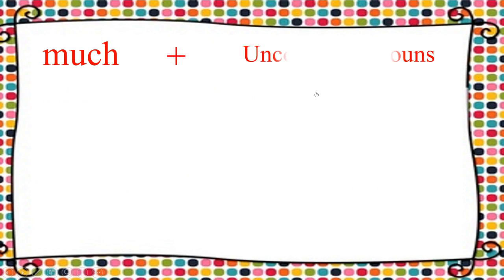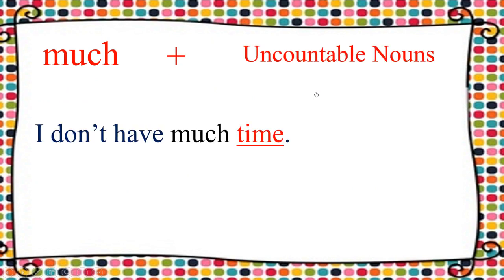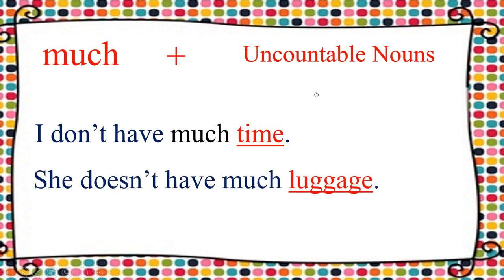The first one: 'much.' It works with uncountable nouns. For example: I don't have much time. She doesn't have much luggage. So 'time' and 'luggage' are uncountable nouns. The words behind 'much' must be uncountable nouns. Remember that.